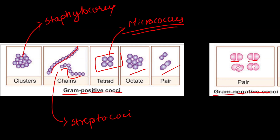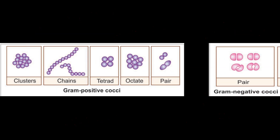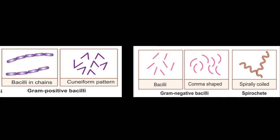For gram negative pink-colored bacteria available in pairs: if they appear lens-shaped under the microscope, the answer is Meningococcus. If they appear kidney-shaped, the answer is Gonococcus. Just by looking at the shape under the microscope you can identify the organism — Meningococcus is Neisseria meningitidis and Gonococcus is Neisseria gonorrhoeae.